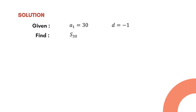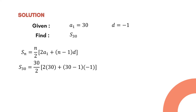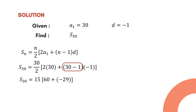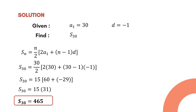We use the arithmetic series formula — this version is used when the last term is not given. Substituting values: S₃₀ = 30/2 × (2×30 + (30 − 1) × (−1)). Simplifying: 30/2 = 15; 2×30 = 60; 30 − 1 = 29, and 29 × (−1) = −29. Combining: 60 + (−29) = 31. The last step is to multiply 15 by 31, giving S₃₀ = 465.